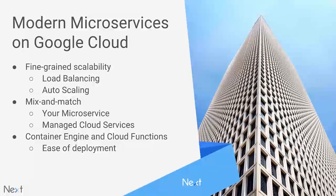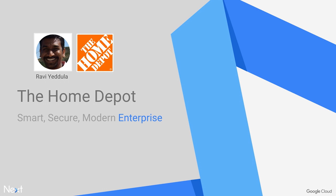To recap: modern microservices on Google Cloud benefit from fine-grained scalability through load balancing and auto-scaling, mix and match of services with managed cloud services, and the future of compute is Container Engine and Cloud Functions. I'd like to introduce Ravi Udula, senior director at Home Depot. My name is Ravi Udula — I'm a senior director on the HomeDepot.com team responsible for cloud platform architecture and migration to Google Cloud. I've been with Home Depot for six years, and for the last 15 to 18 months I've gotten to know Google really well.